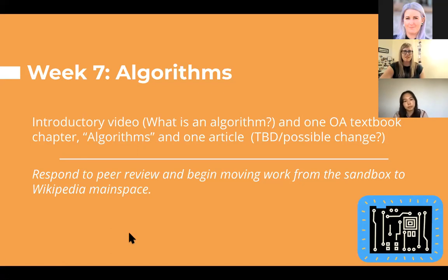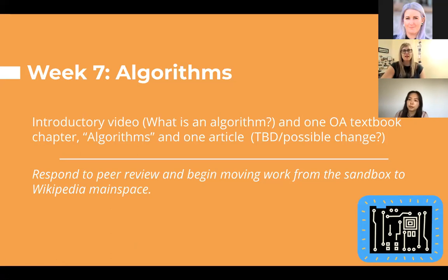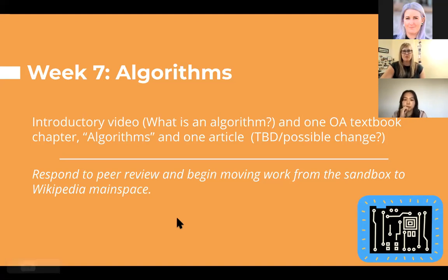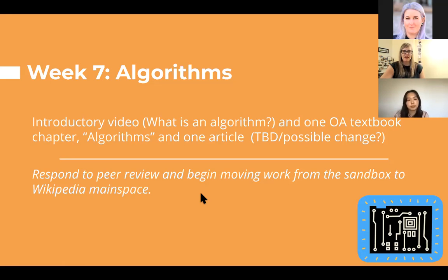We'll go quickly through these since we're running out of time. We kind of go from a real focus on Wikipedia and then start discussing the internet in a broader perspective in these last few weeks. In week seven, we discuss algorithms. We watch a video about what is an algorithm, because we have students from all majors and a lot of students don't know the basics of coding nor algorithms — they need a little introduction. We do a reading from that open access textbook and one article about bots in Wikipedia, and students begin moving their articles to the main space on Wikipedia.